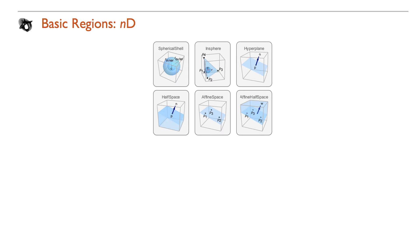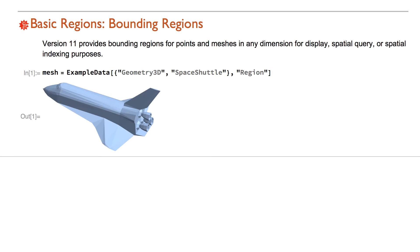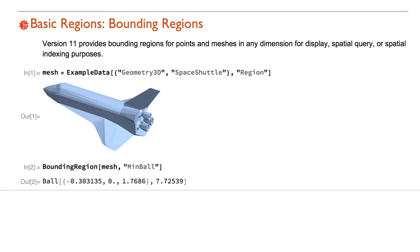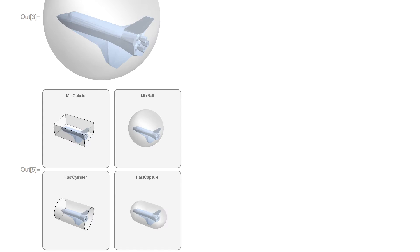Affine half space is among the new n-dimensional regions in version 11. Bounding regions for points and meshes can be computed in any dimension for display, spatial query, or spatial indexing purposes. Let's find the minimum volume ball that encapsulates the mesh. You can also showcase the mesh within various bounding regions with the following function.